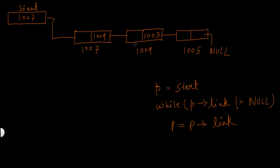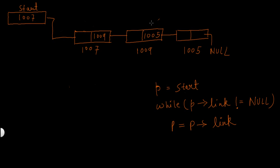Traversal means visiting nodes of a linked list starting from the first node, one after the other in sequence. So first I visit this node, then this node, and then I reach the last node. We need to traverse because, as I explained in the very first tutorial, linked lists do not allow random access. We cannot access any node directly from the middle — from the first node we must visit nodes one after the other in sequence until we reach the desired node.